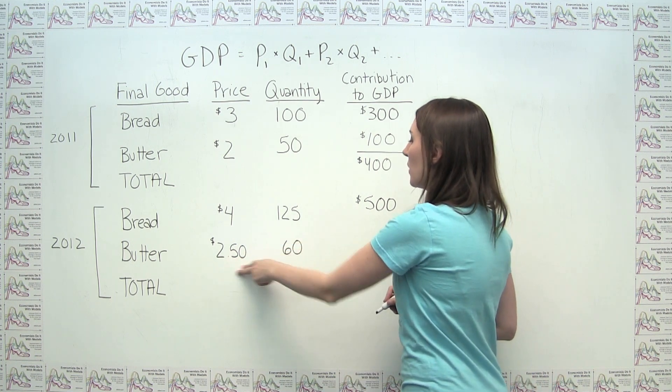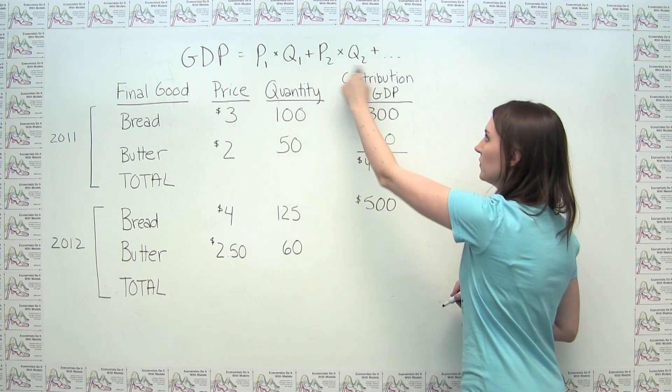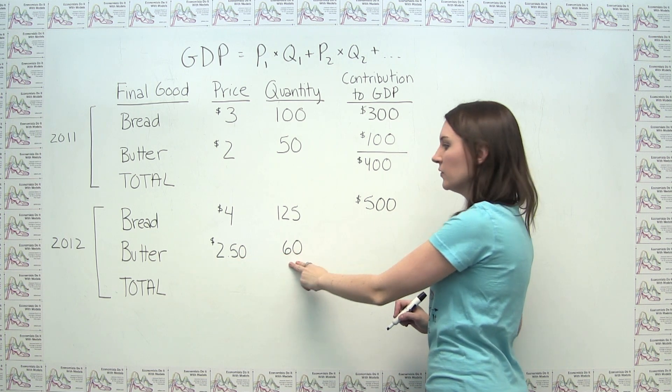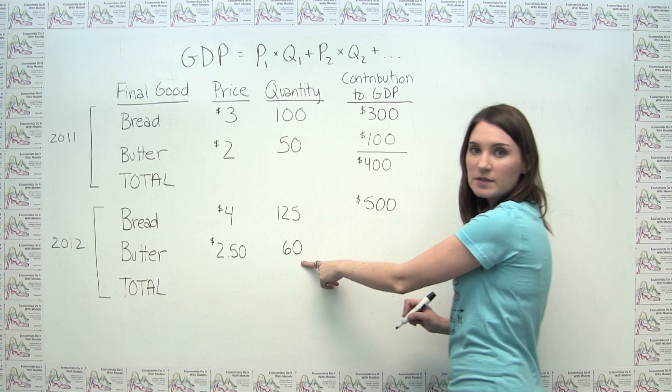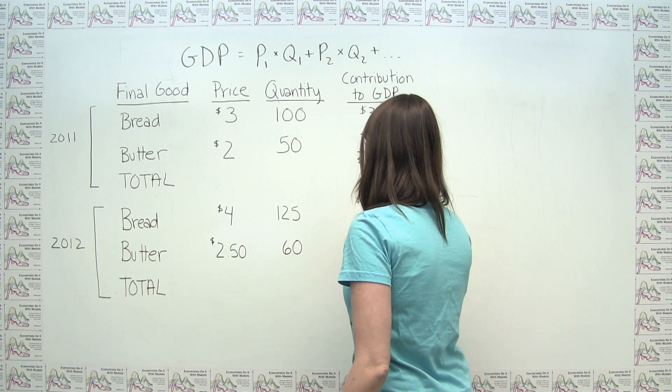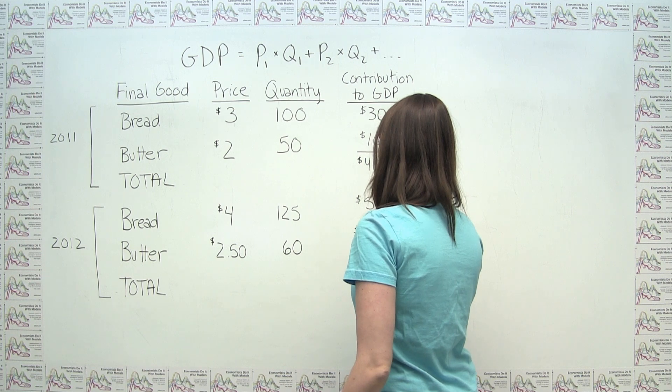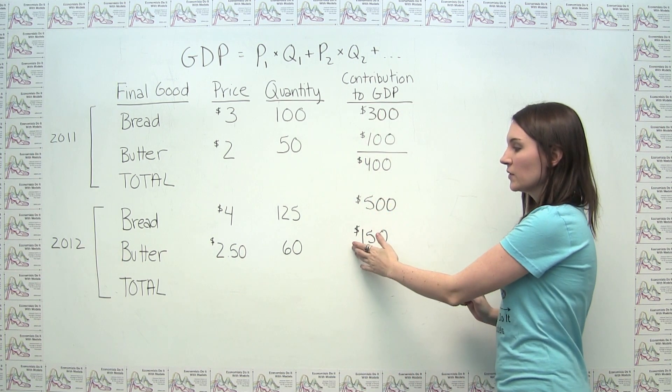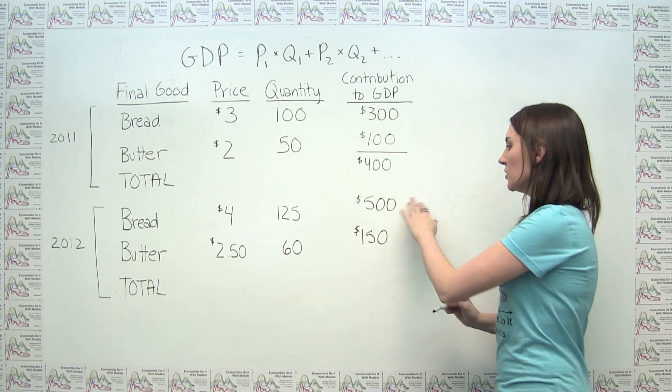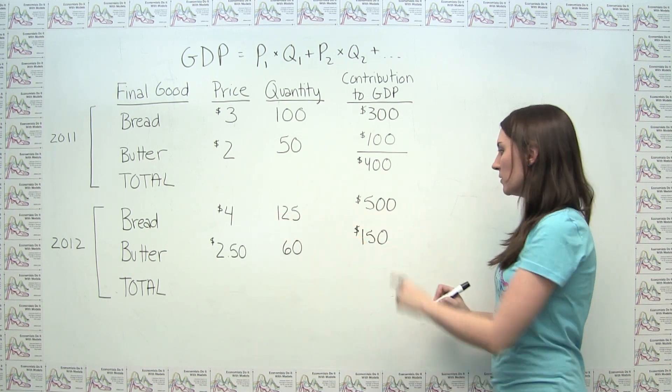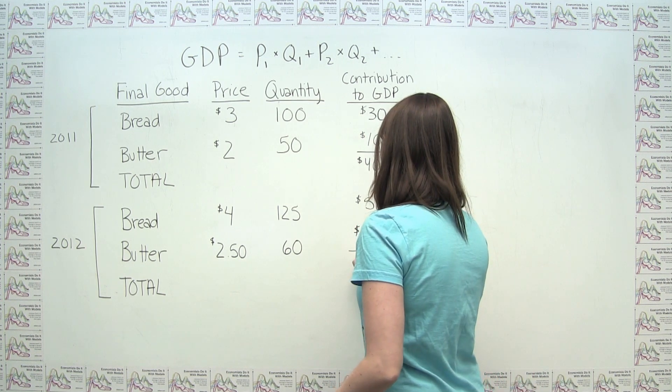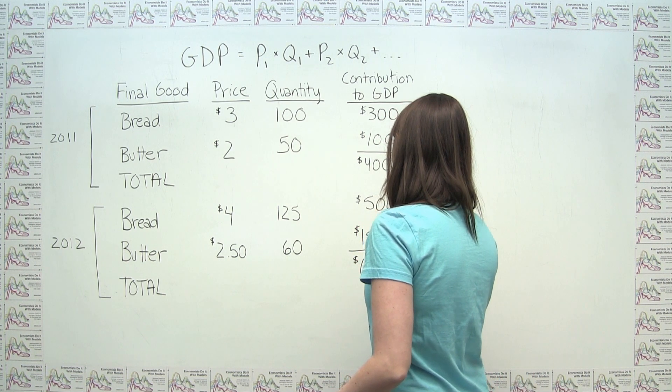Similarly, butter's contribution to GDP is just the price of butter times the quantity of butter, or $2.50 times 60 units, which gives us $150. So butter's contribution to GDP is $150. And since, again, these are the only two goods in our economy, our total GDP for 2012 is just $500 plus $150, or $650.